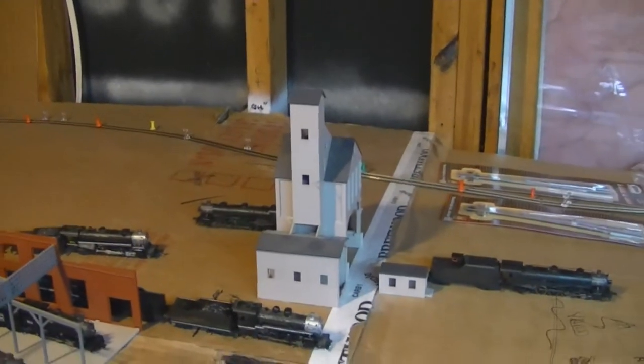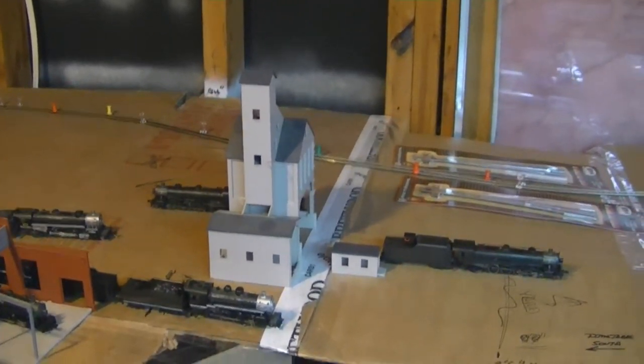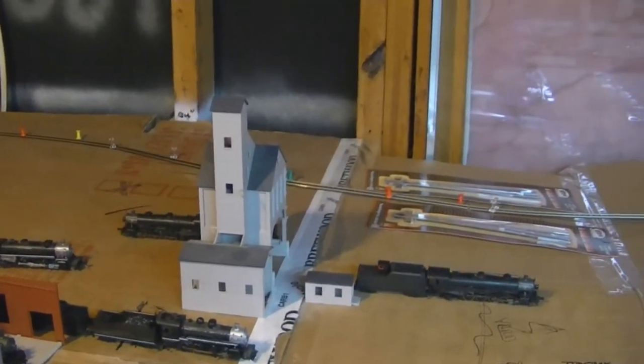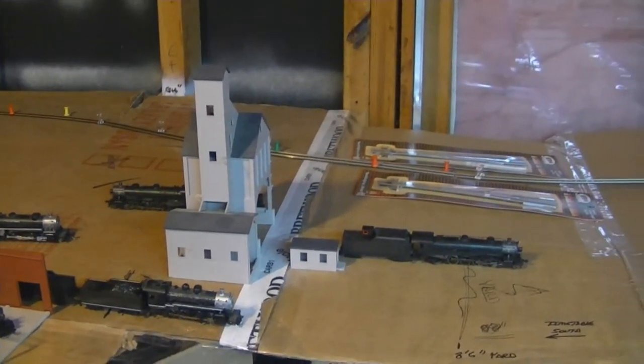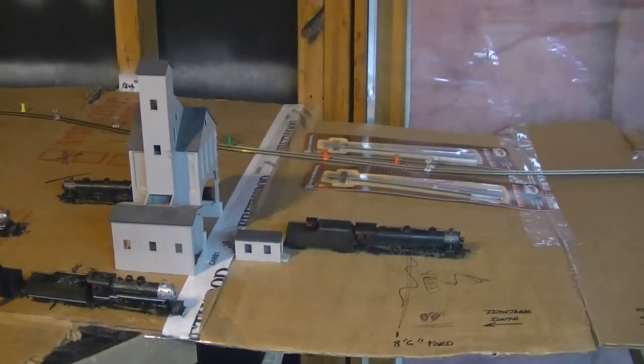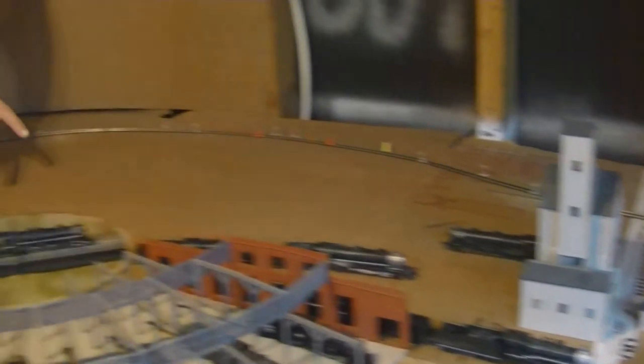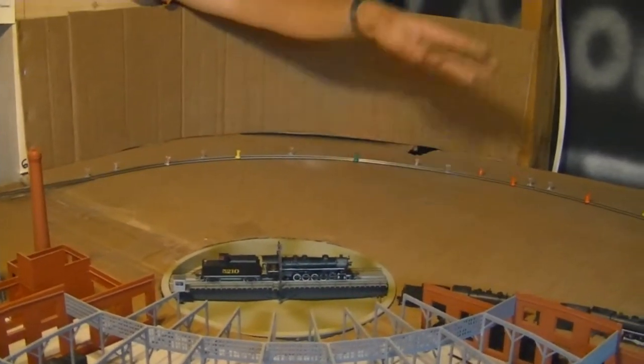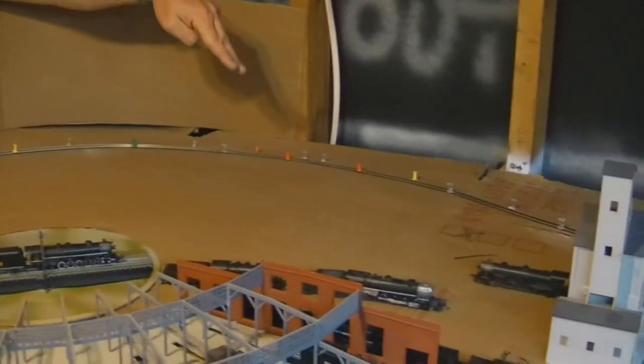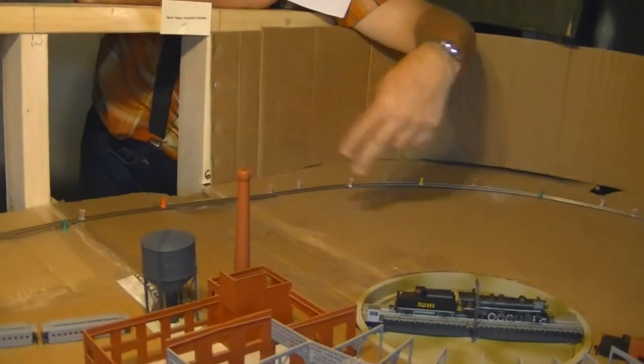The coaling tower is where the beginning of the locomotive terminal will have a cinder conveyor, a track to go for dumping coal cars, ready tracks, and then you have garden tracks out through here.